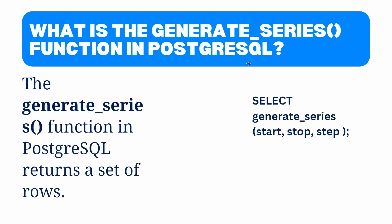Now look at the syntax. It accepts three parameters: start, stop, and step. Here, start is the starting value of the sequence, stop is the ending value of the sequence, and step is the increment value between each consecutive value in the sequence. The step argument is optional and defaults to one if it is not specified.